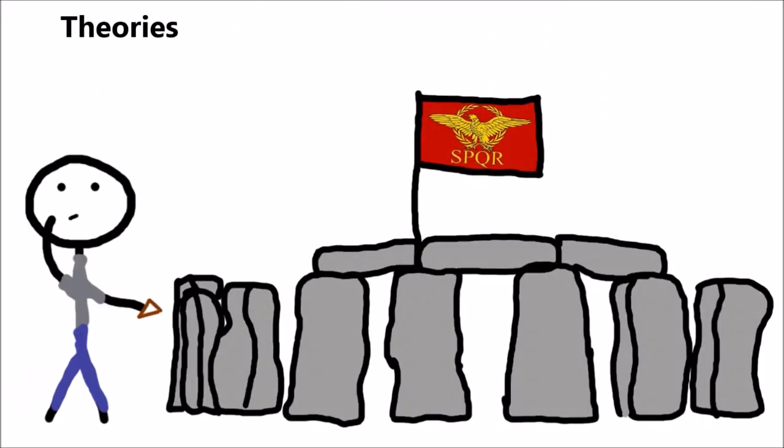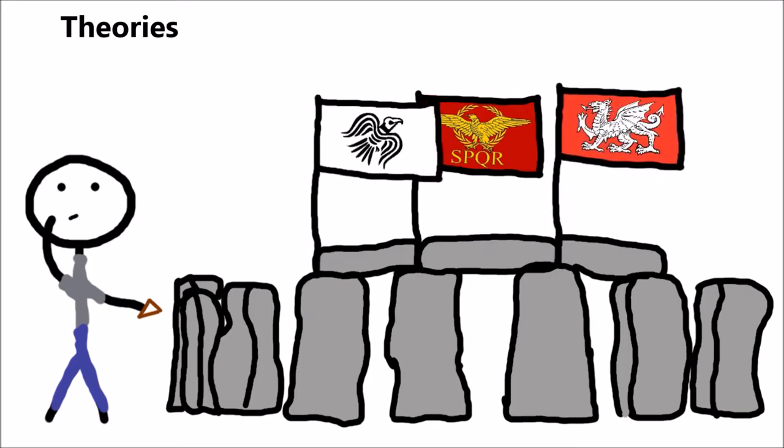In 1655, an English architect called John Webb argued that Stonehenge was built by the Romans as a Roman temple for the god Caelus. Other architects around the same time argued that the Danes or the Anglo-Saxons built it. These theories were the most common after the medieval period, until proven wrong in the 1900s. These theories were proven wrong when the stones were dated before the Vikings, Anglo-Saxons or Romans entered the British Isles.